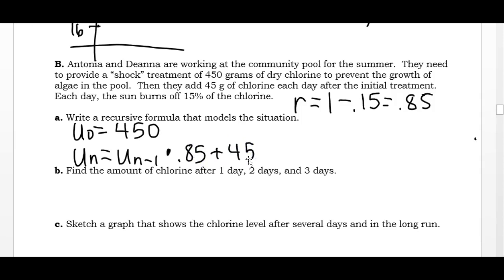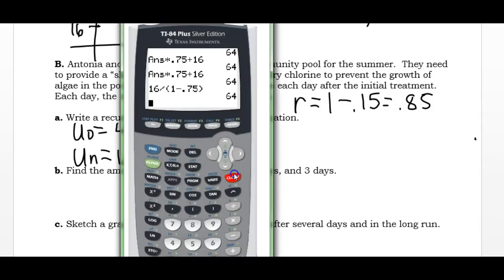I want to find the amount of chlorine after 1, 2, and 3 days. So on my calculator, I have my starting value. I am multiplying by 0.85, that's my 85% retained after 15% decreases, and I'm going to replace that with 45 grams each day. So after 1 day, 2 days, and 3 days, I have these 3 values.